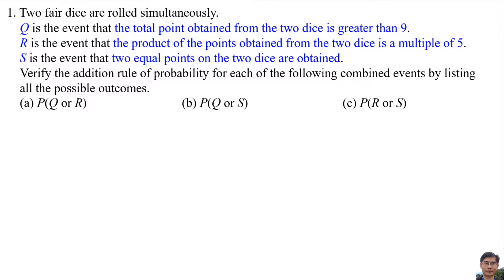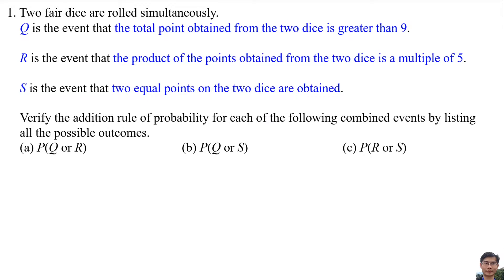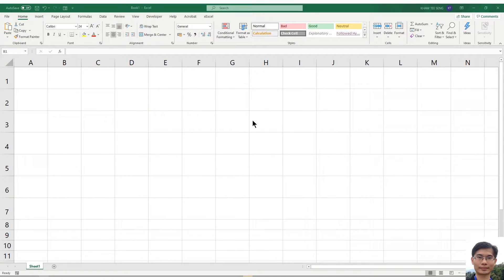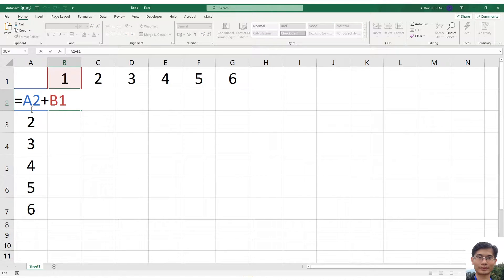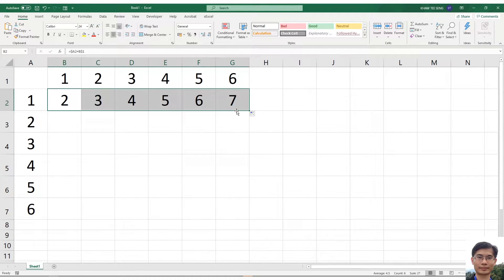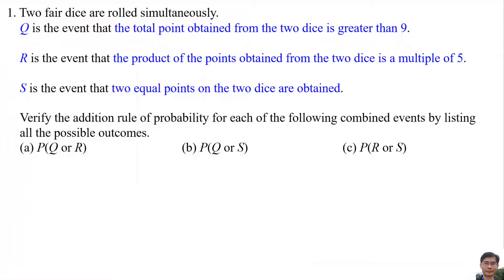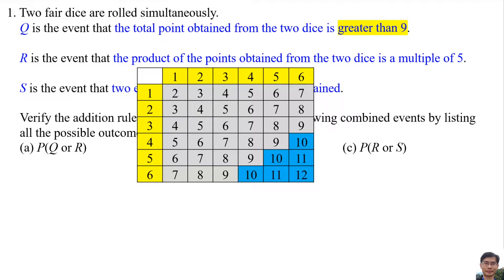First, we list out all the possible outcomes for Q, R, and S. We can use Excel to list out all the possible outcomes for Q and R. For event Q (total more than 9), the possible outcomes are: (4,6), (5,5), (5,6), (6,4), (6,5), and (6,6). Then we use Excel to list out all the possible outcomes for R.